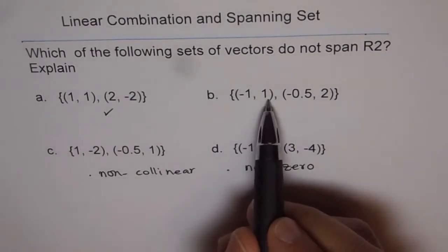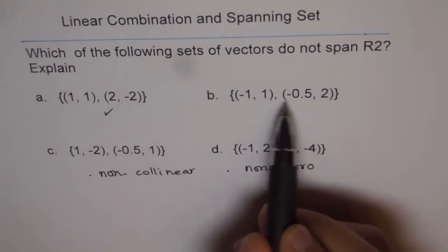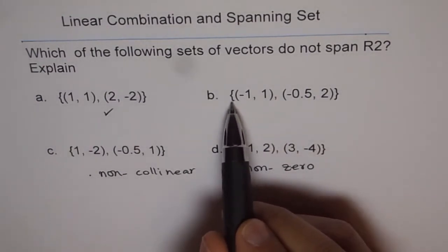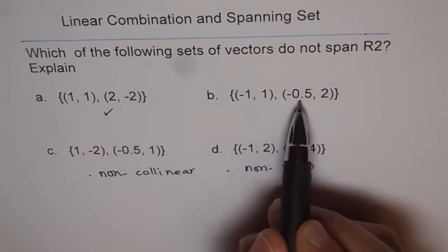For option (b), (-1,1) and (-0.5,2): To get 2, I need to multiply by 2. If I multiply the first one by 2, I get -2, not -0.5. So they are not scalar multiples and are non-collinear.